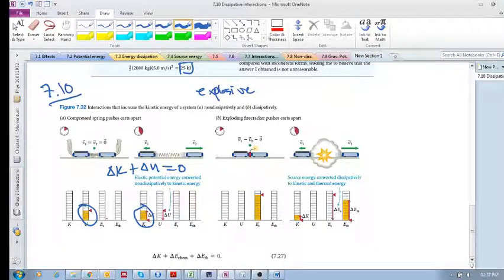In this case, the stored energy is in the form of source energy—there's a chemical explosion. So there's a lot of source energy here, no kinetic energy, no potential, and no thermal. Then as this explodes, some of it gets converted to kinetic energy and the rest gets converted to thermal energy. Now this is dissipation—you would agree that we cannot recover this energy.